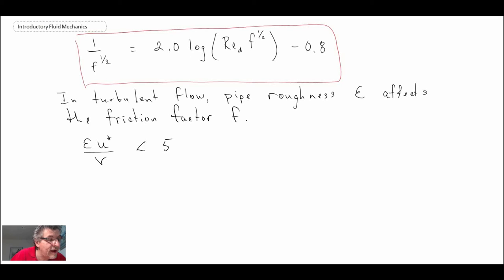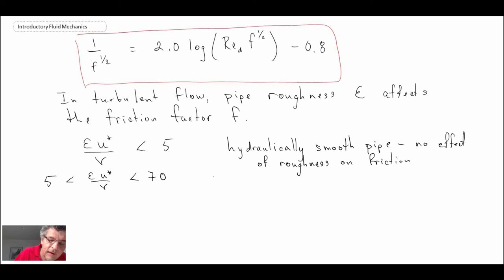In a way this is kind of like a Reynolds number when you think about it because we have a length scale, we have a velocity, and we have the kinematic viscosity in the denominator. But if that number is less than five that would be a hydraulically smooth pipe.